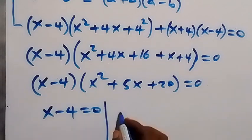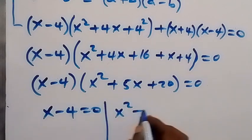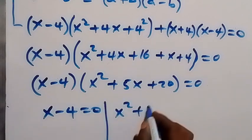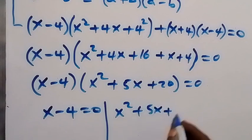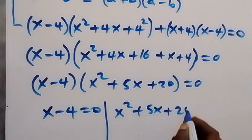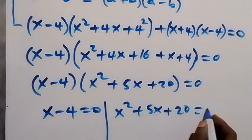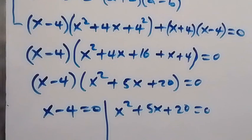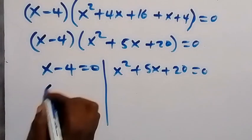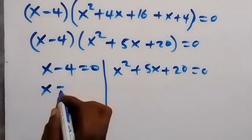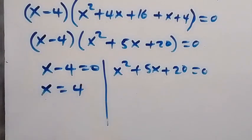We now have two possible cases. Either x − 4 = 0, which gives x = 4, or x² + 5x + 20 = 0, which we solve as a quadratic equation.